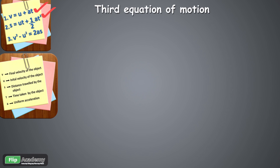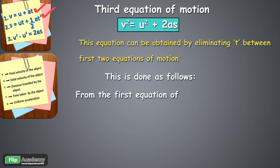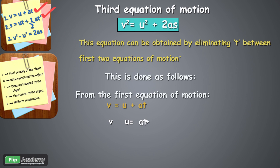Let's start with the third equation of motion: V squared minus U squared equals 2AS. To obtain this equation, we use the first two equations of motion and eliminate T. From the first equation of motion, V equals U plus AT, we rearrange to make T the subject. So T equals V minus U upon A.